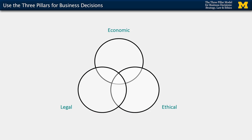As you can see from this diagram, the Harvard model brings the three pillars together so that there's overlap among the economic, legal, and ethical pillars, creating this sweet spot — the zone of sustainability — in the center.